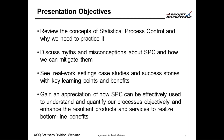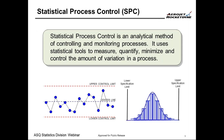Let's discuss briefly what is Statistical Process Control, or SPC. Statistical Process Control is an analytical method of controlling and monitoring processes. It uses statistical tools to measure, quantify, minimize, and control the amount of variation in our processes. The major thrust of SPC is understanding, controlling, and managing the variation.